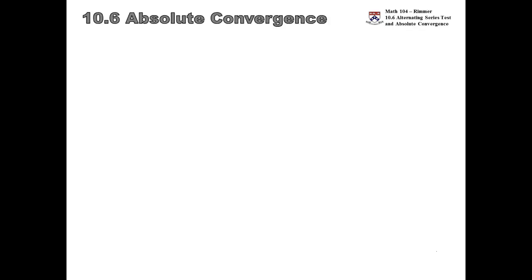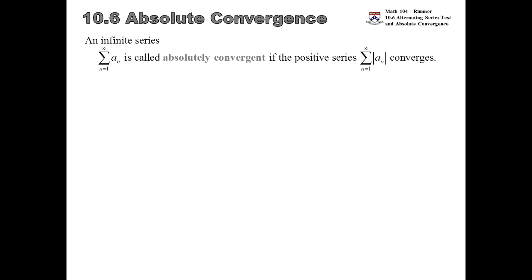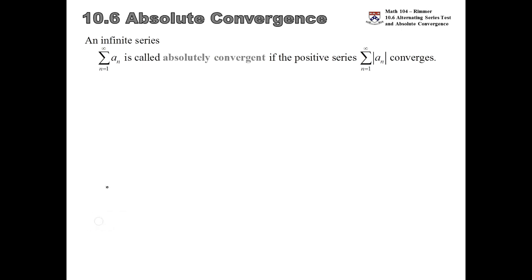Let's consider convergence of a series in more detail. There are actually different degrees of how a series might converge. When you take a series and make all the negative terms positive, you're essentially looking at the series of absolute values. If that series converges, then the original series gets a special type of convergence called absolutely convergent.